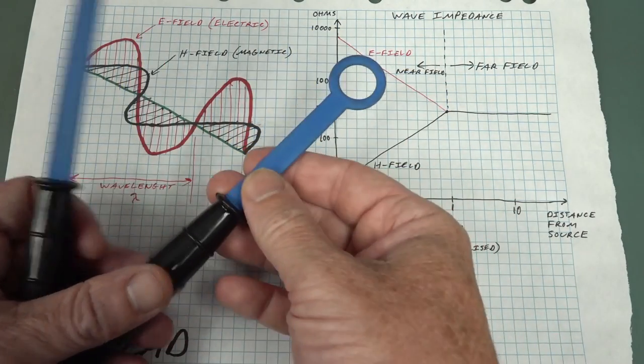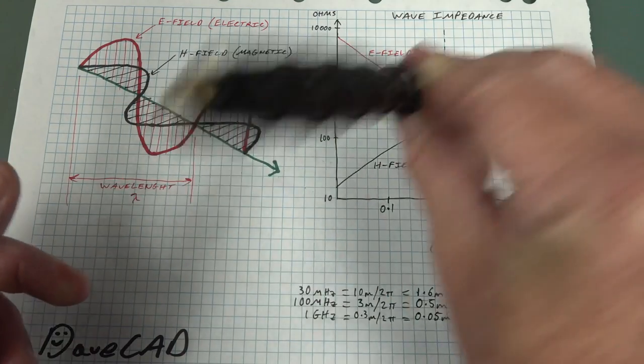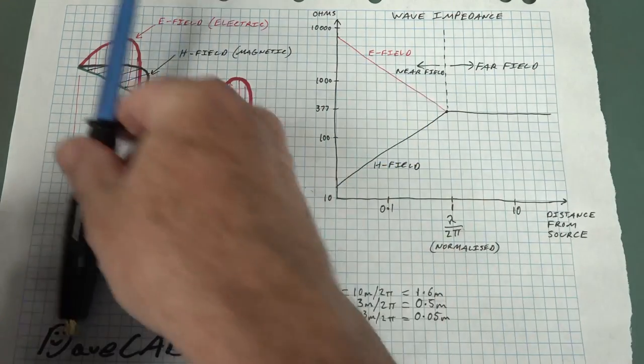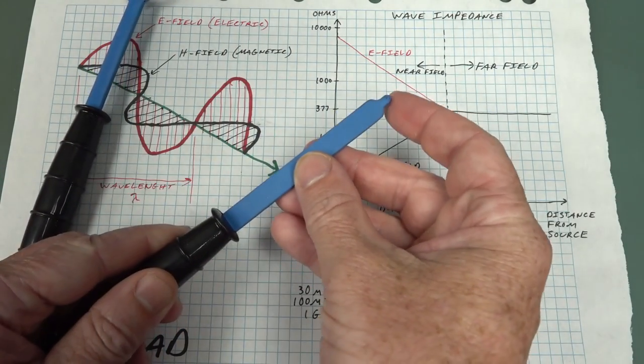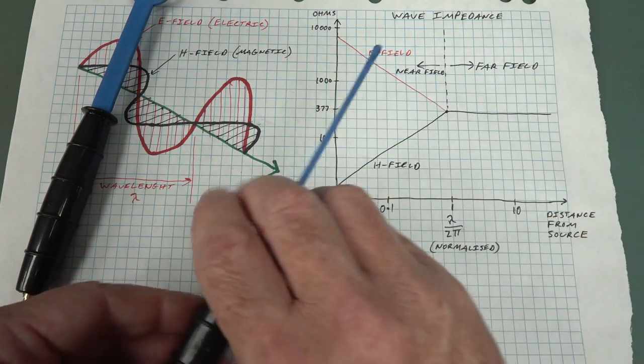And the magnetic field probes, they are sensitive to orientation like this and like that as well, as I talked about on the plane. Whereas the electric field is not sensitive. You can just put that in any orientation and it's not going to make a difference.